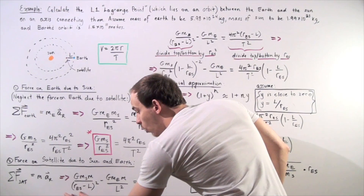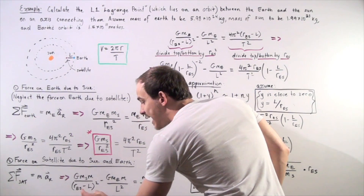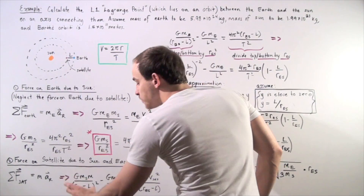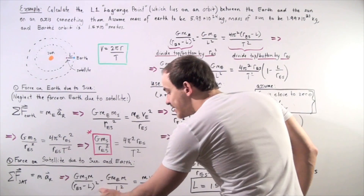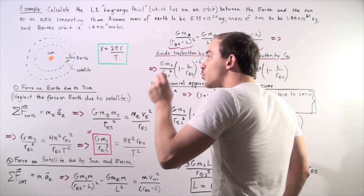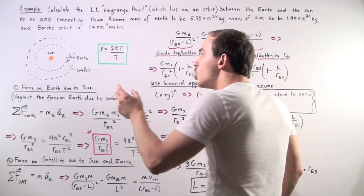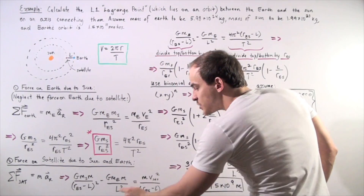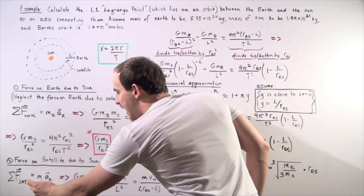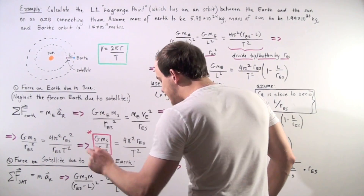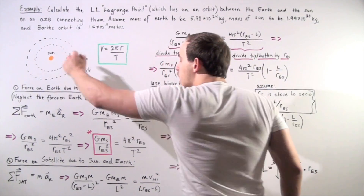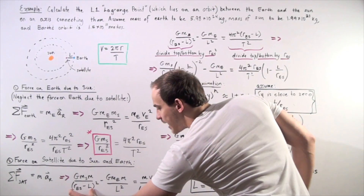The radius of the Earth's orbit minus L gives us the radius of the satellite's orbit around the Sun. Notice that if the Sun disappears, the radius of the satellite's orbit would simply be L — that's why we place L squared in the denominator for the Earth's force term. This equals mass times the satellite's velocity squared divided by the radius of the satellite's orbit, identical to this value.